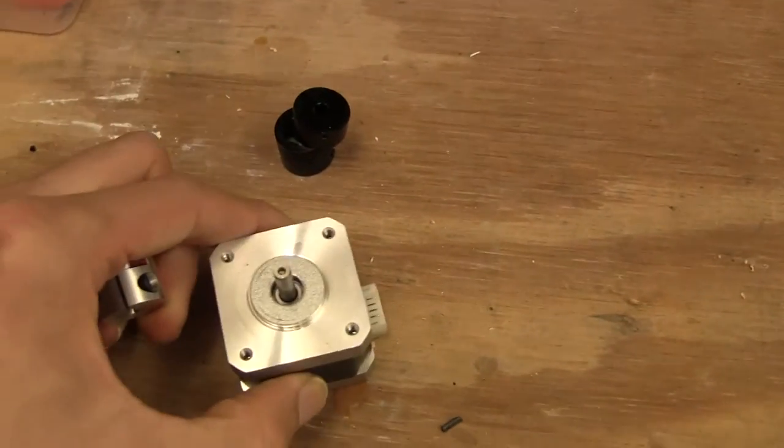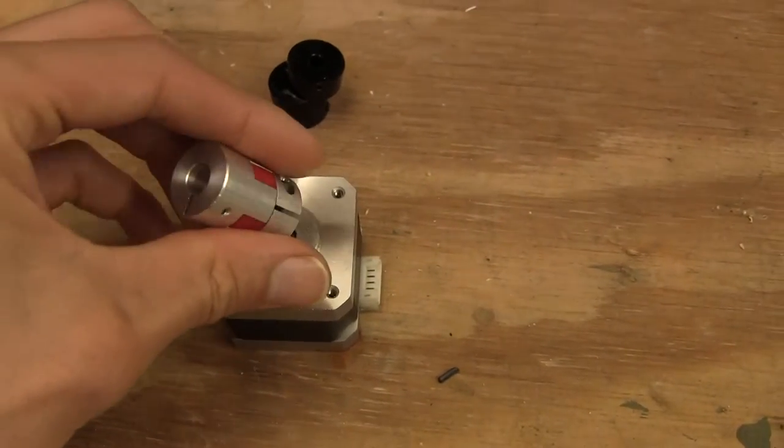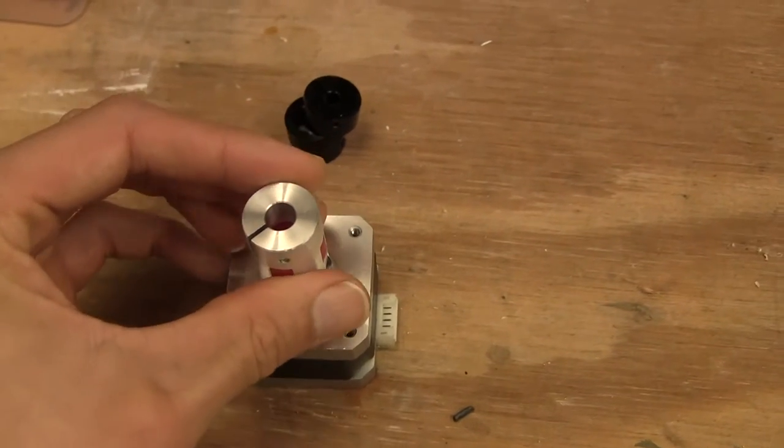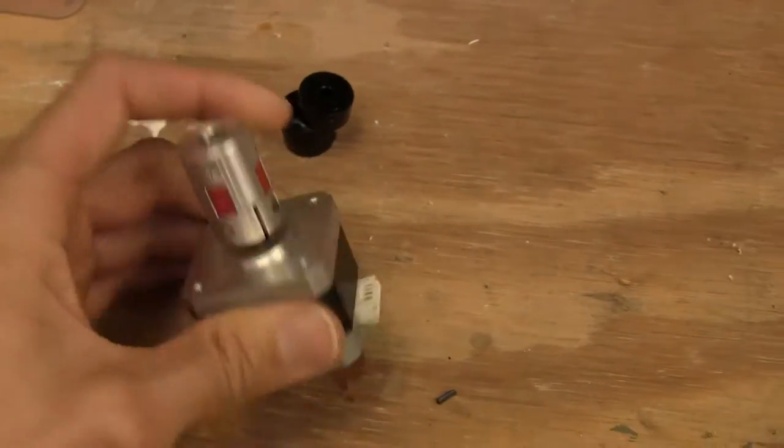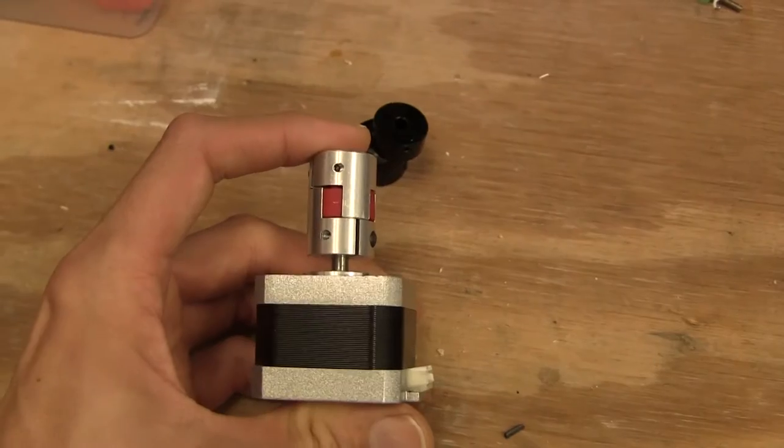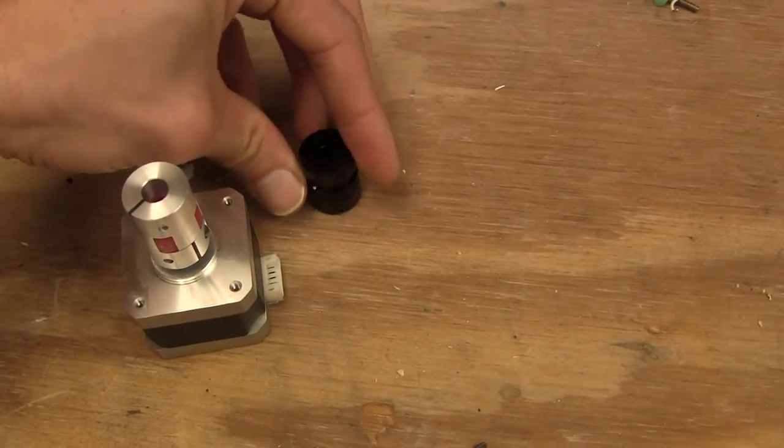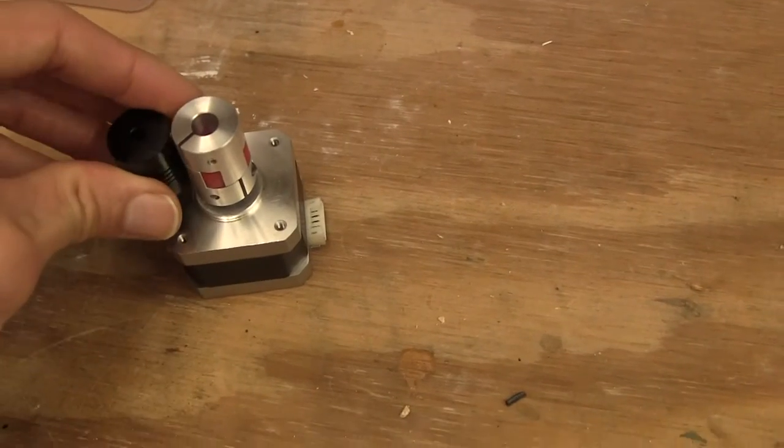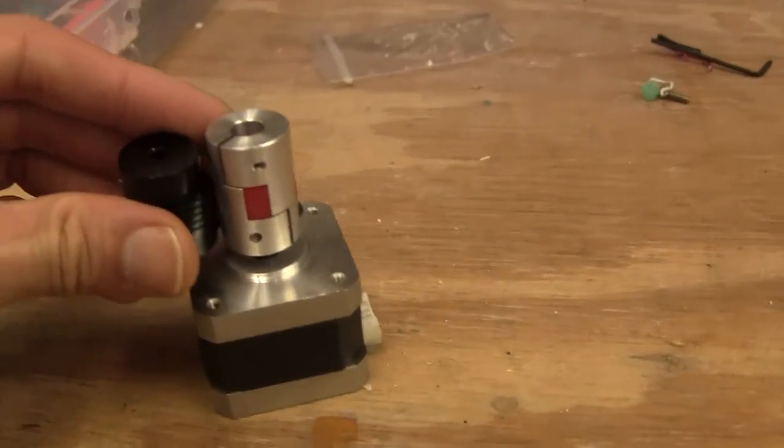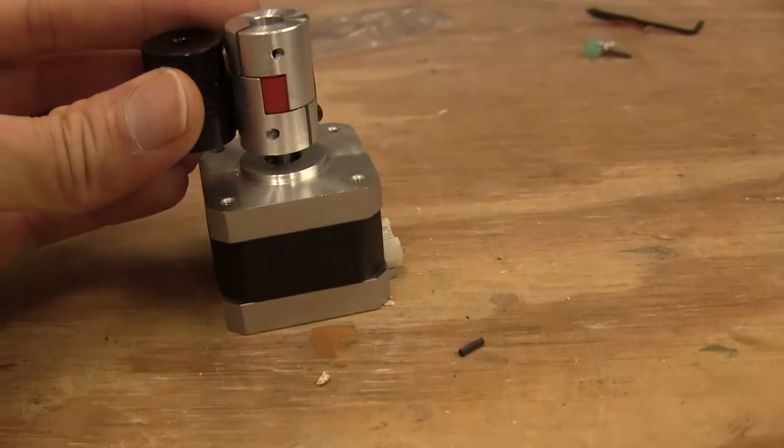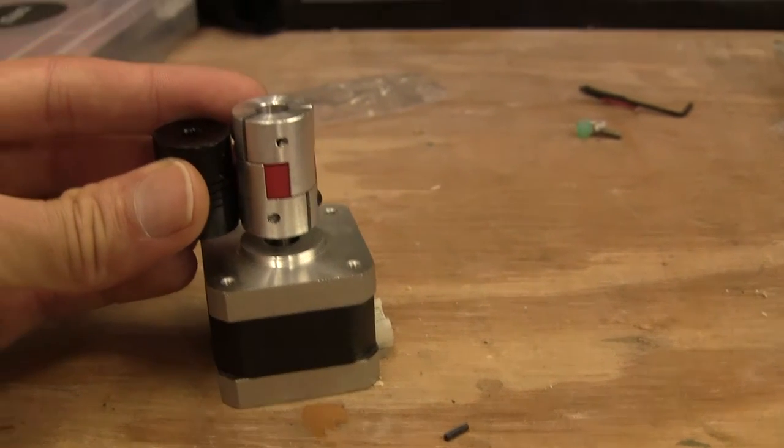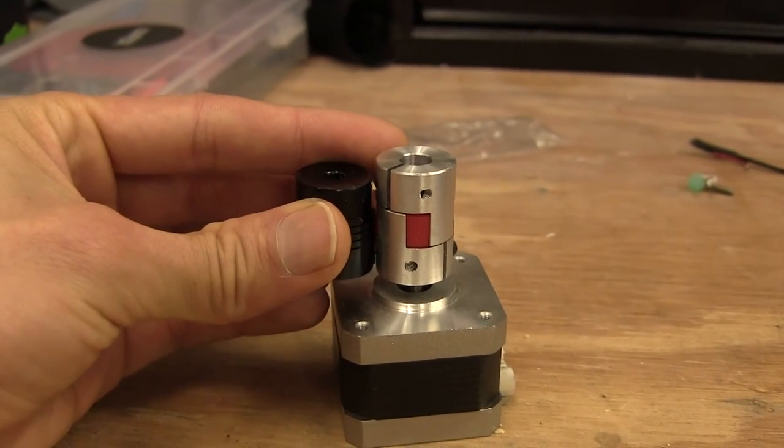So here's the Zortrax Z-axis motor. It slips on this end just fine. It's a bit longer, but it should fit fine. This one was 25mm long, and the new one is 30mm long. So not a huge difference.